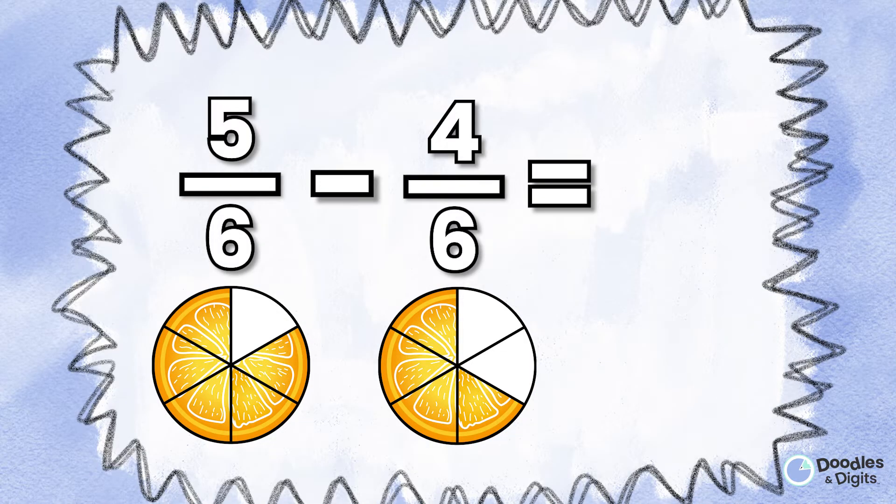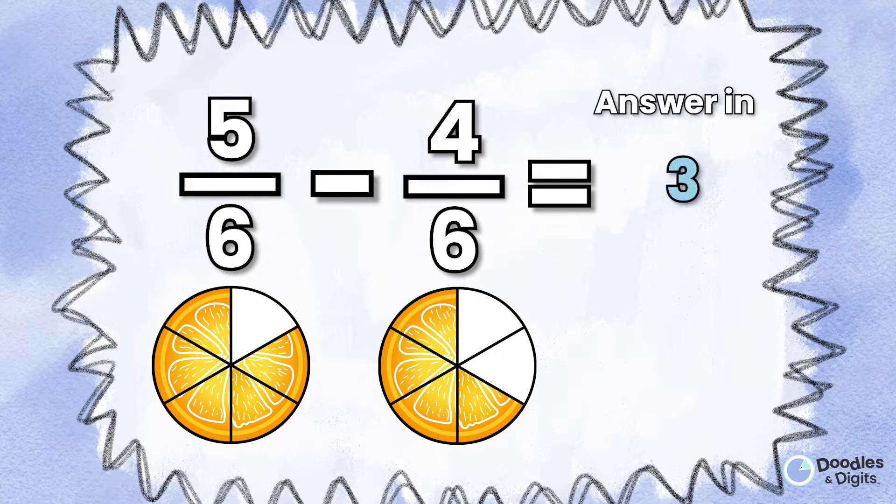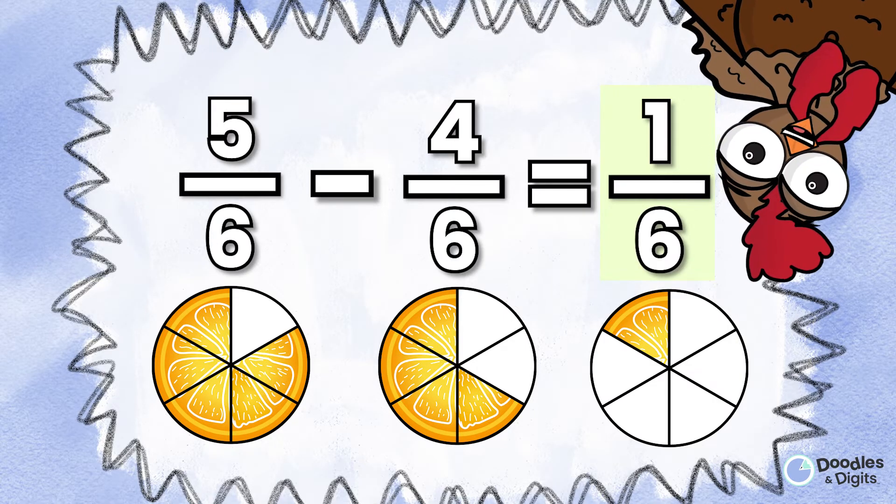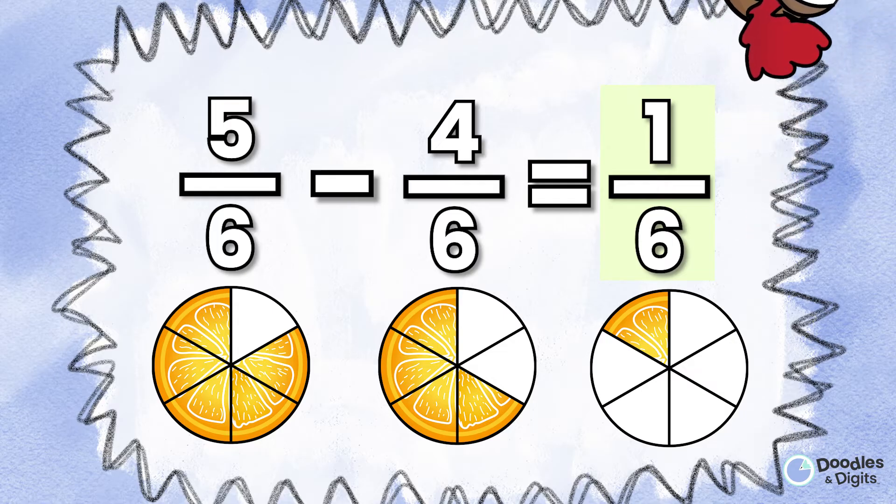Five sixths minus four sixths. Five sixths minus four sixths equals one sixth.